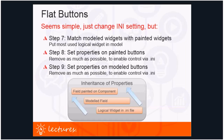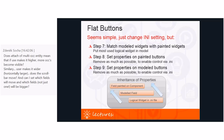Flat buttons seem simple, but steps seven, eight, and nine are closely related and involve understanding property inheritance: the logical widget in the dot IR file gets overruled by the modeled field, which in turn gets overruled by a field painted on a component. In step seven, the modeled widget must be matched with the painted widgets by putting the most-used logical widget in the model. Step eight sets properties on painted buttons, removing as much as possible to enable control via the dot INI file. Step nine sets properties on modeled buttons, again removing as much as possible for INI file control.